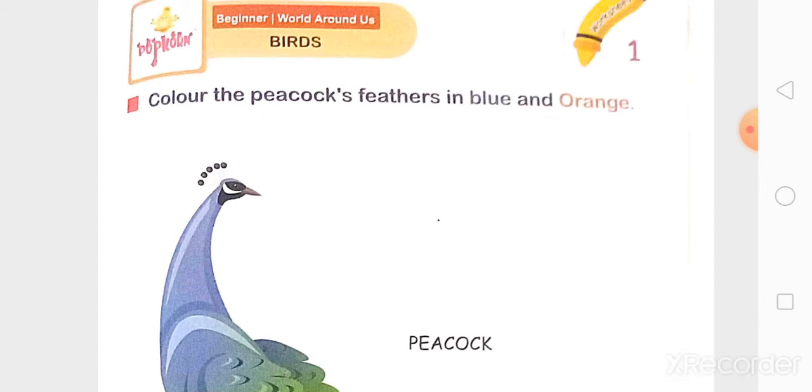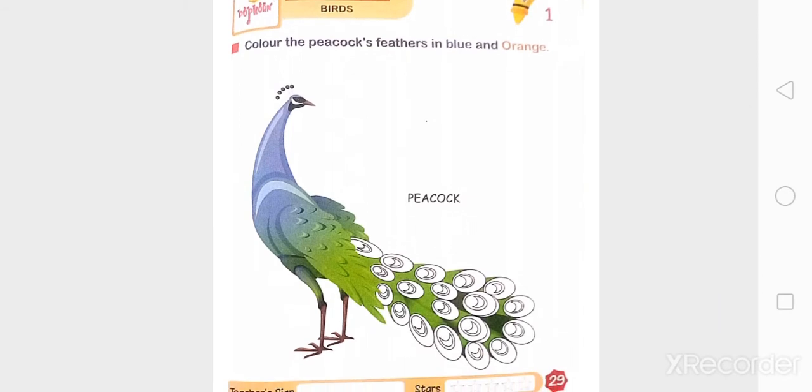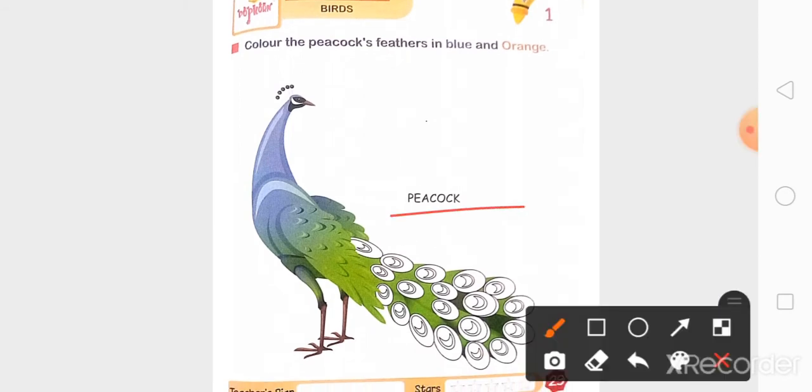Birds, ये कौन सा बचो, ये कौन सा bird दीख रहा है? Peacock, है न. आपको Peacock के feathers में blue and orange color करना है.